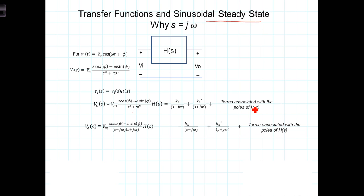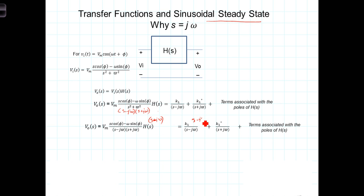Now to do this partial fraction expansion we need to determine the value of K1. As you can see here, the S² + ω² factor gives us S minus jω times S plus jω, giving us those two fraction terms. To evaluate K1 we multiply both sides of the equation by S plus jω — and over here we multiply by S minus jω — and it gets distributed to each of these terms, and also to each of the terms from H(S).